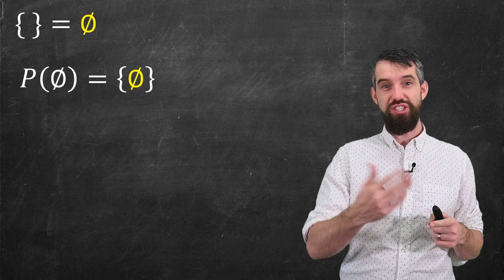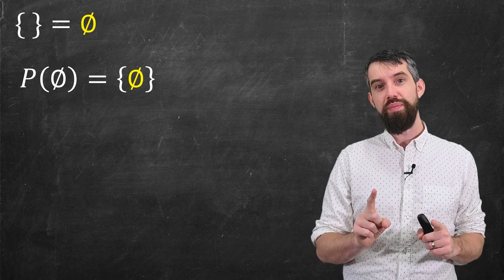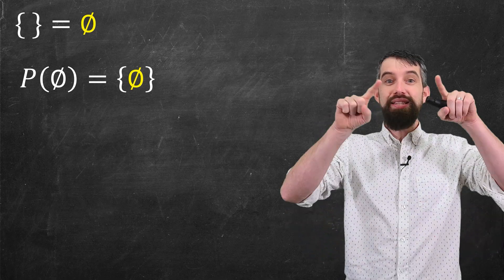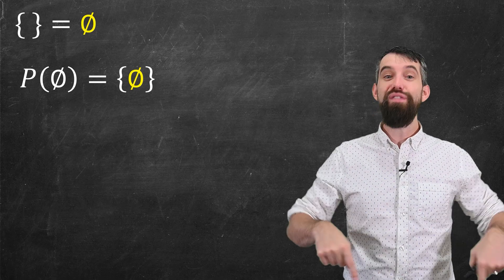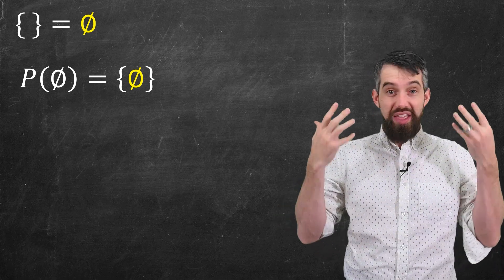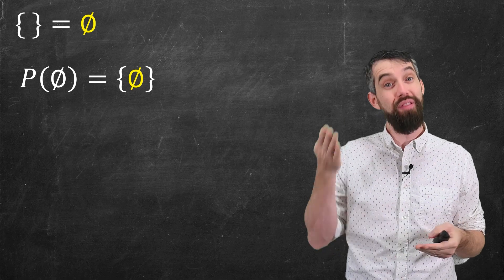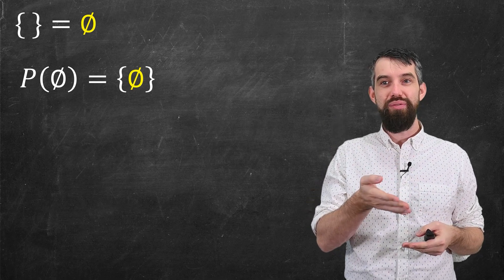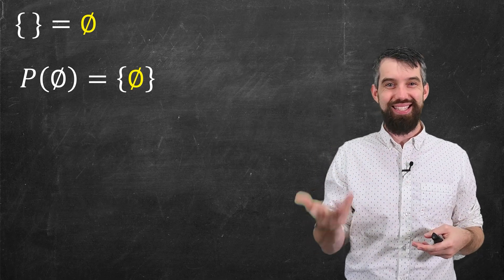Now, it's kind of funny. You might think it's just the empty set, but not quite. Well, the power set is the set of all different subsets. So on the outside, you have to have the set notation. On the inside, well, the only subset of the empty set is itself, the empty set.